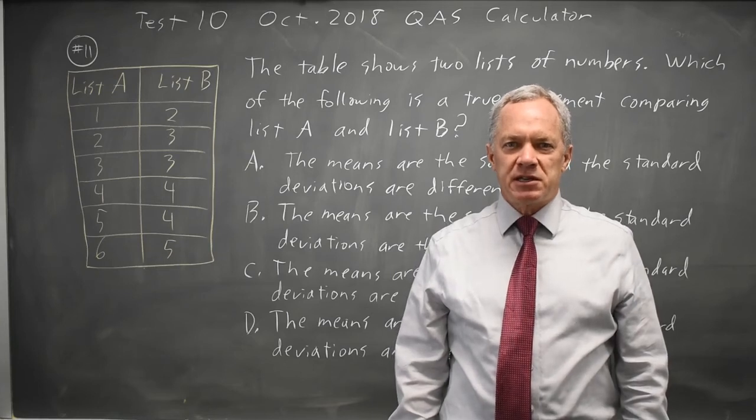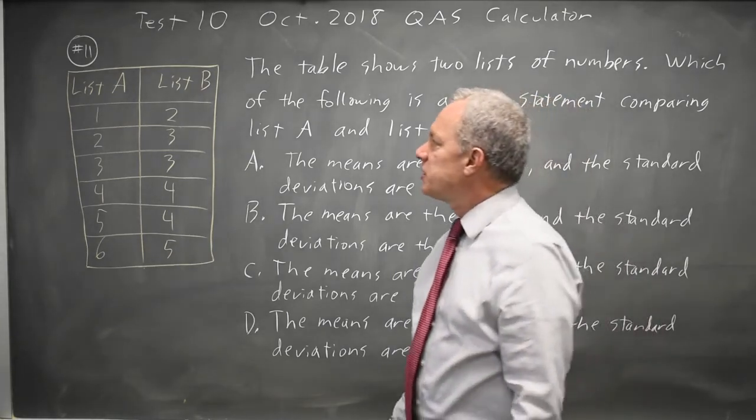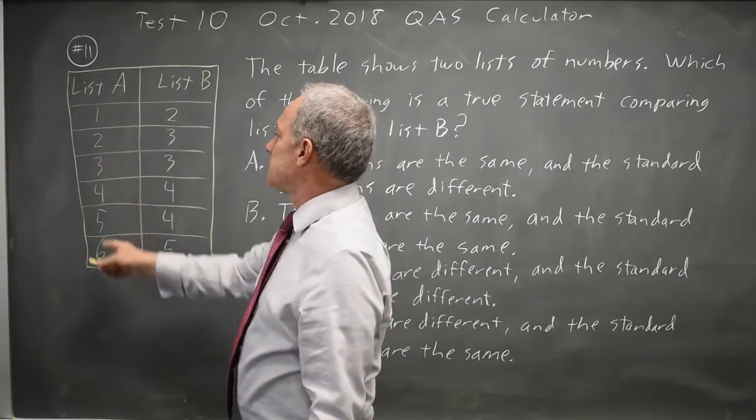This is question 11. The College Board is asking us to compare the means and standard deviations of two lists of numbers, lists A and B.